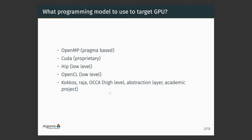Then you have CUDA. CUDA is really low-level and it is proprietary, targeting only NVIDIA. No Exascale system in the U.S. will use NVIDIA, so if you have a CUDA code, you will need to port it. Then you have HIP, which is like CUDA with small modifications to not be issued by NVIDIA. It was developed by AMD, is open source, available on GitHub, but is only targeted for AMD and NVIDIA GPUs.